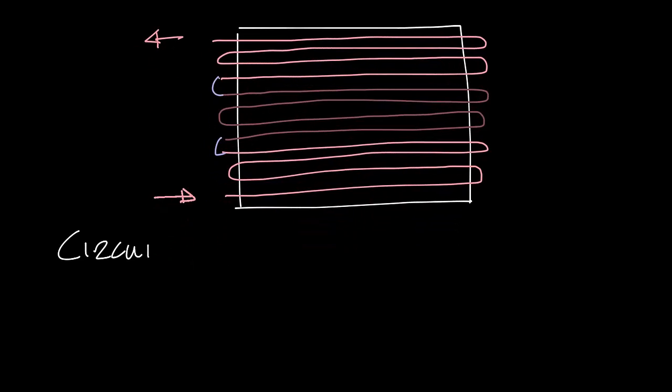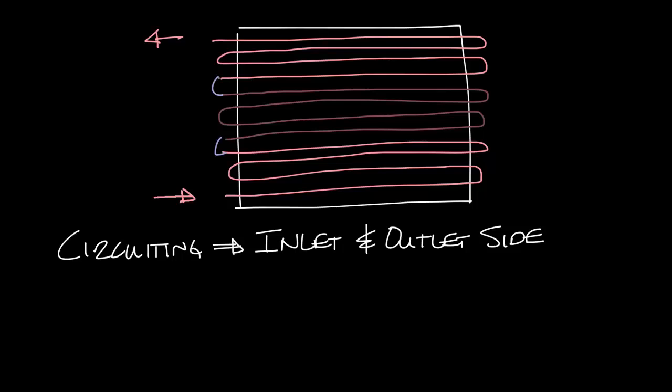So this may be possible but there's a couple things that circuiting in a water coil does. First you want to get the inlet and the outlet of the water coil on the correct side. Usually this means on the same side, so all your piping connections come to the same area.